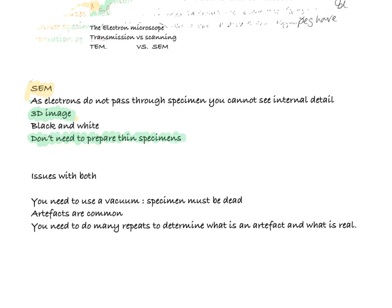There are a few issues with both TEMs and SEMs. Firstly, you need to use a vacuum. Now this is really important because there can't be any other things, there can't be any other molecules that would change the direction of the electrons. The electrons need to be able to move freely in a continuous beam towards the specimen, so you have to use a vacuum. Therefore, the specimen that you're studying must be dead. So you can't ever study any movement of a specimen with an electron microscope. And artifacts are really common. This is because electron microscopes have a much greater level of preparation than optical microscopes. Therefore, you need to do many repeats to determine what is actually an artifact and what is real in your specimen.